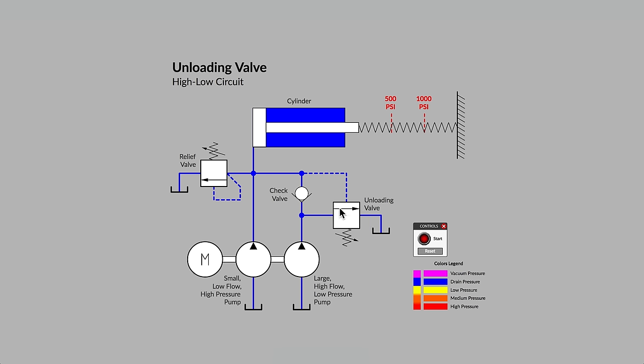The poppet, represented by an arrow inside of the box, will move to the open position against the force of the spring only when the pilot pressure is high enough. See if you can figure out what the pressure setting is for the relief valve and for the unloading valve.